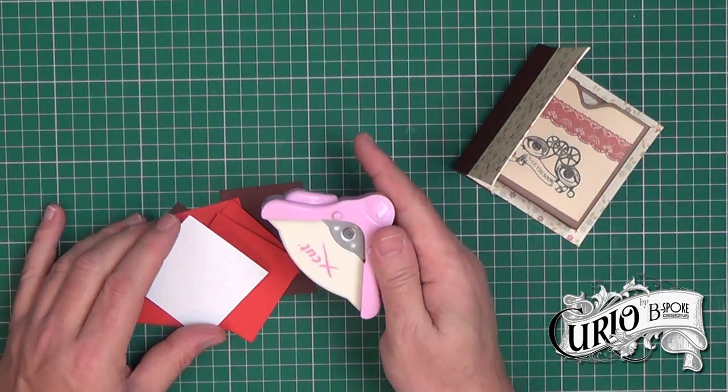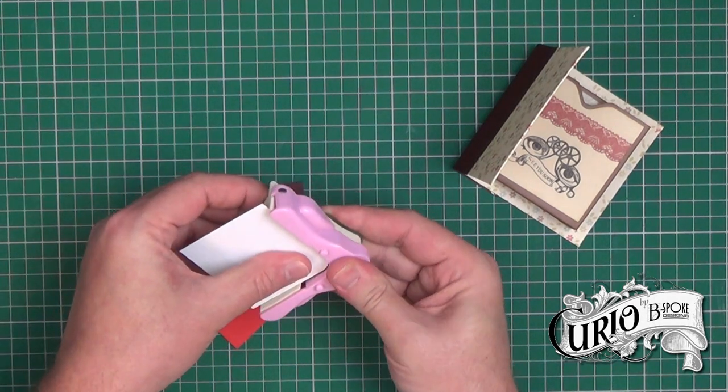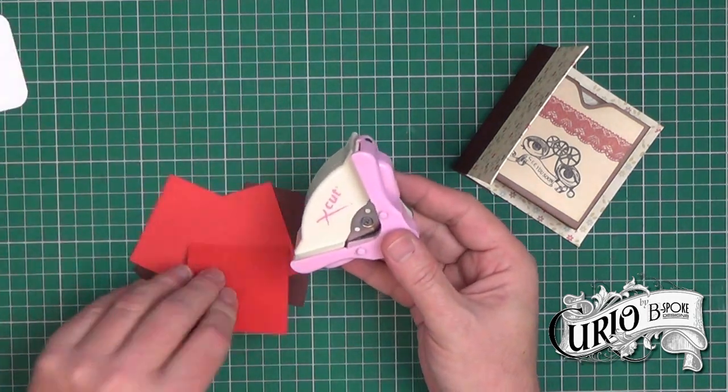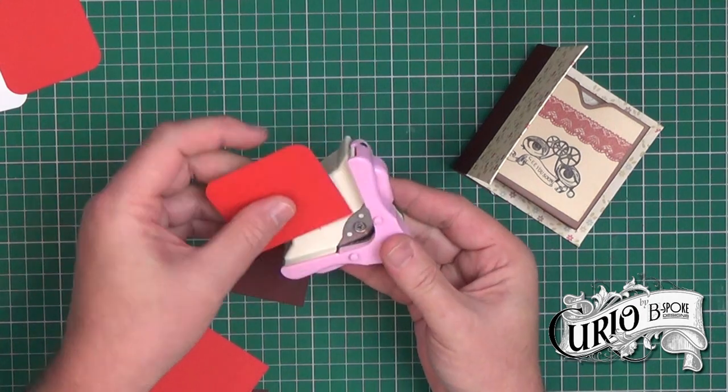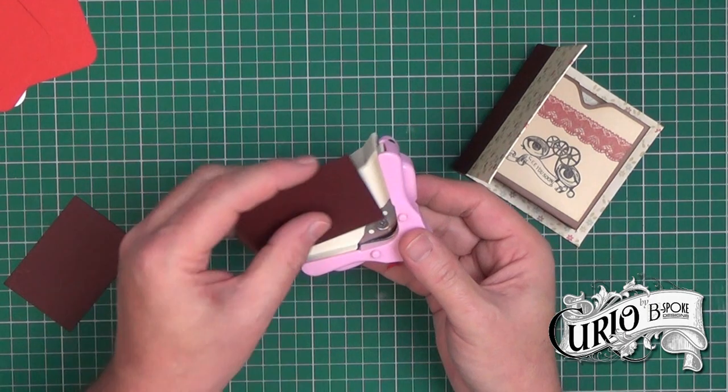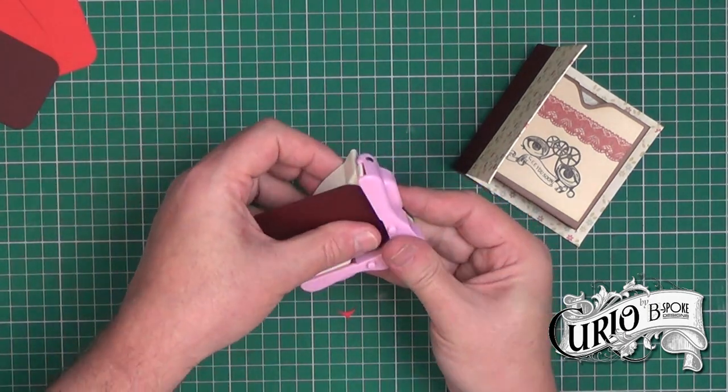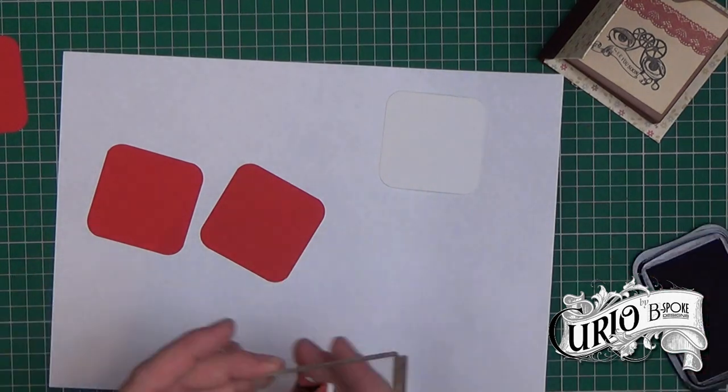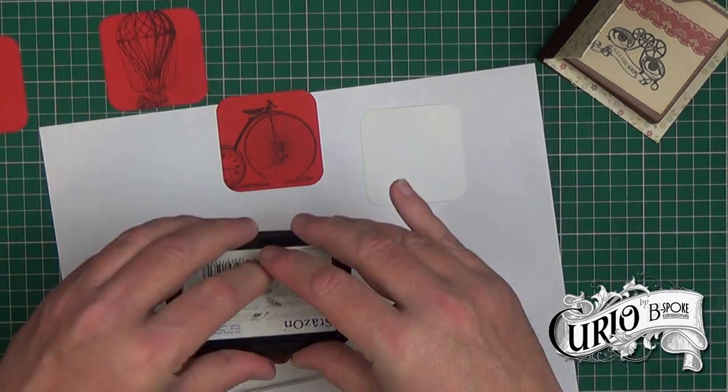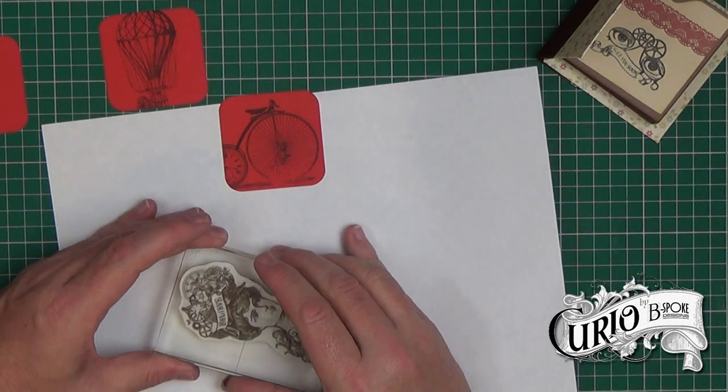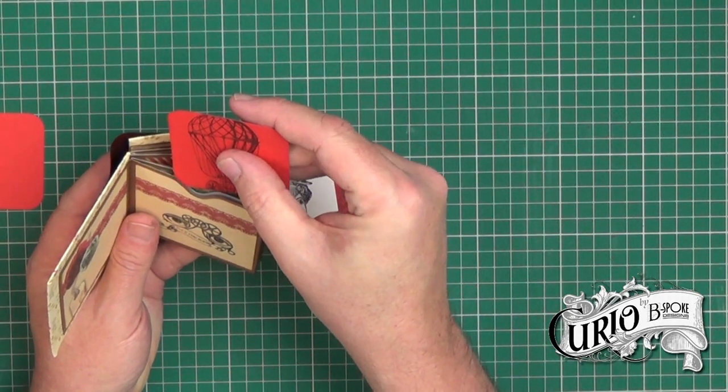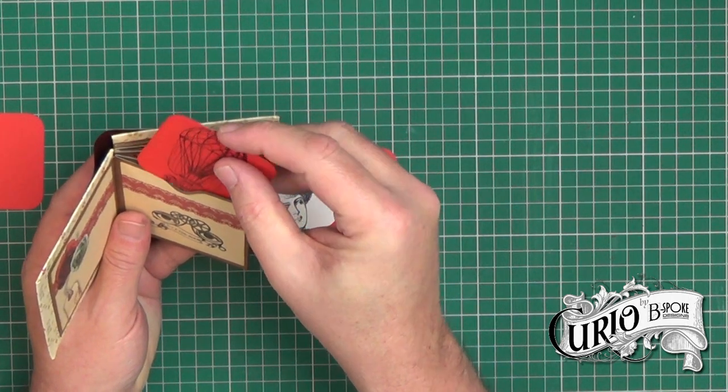I'm using a large corner cutter to round off the corners of the photo mats or journaling spots. On a couple of the mats I'm going to stamp an image with stairs on just to decorate it a little. Of course you can decorate your mini album in whatever style you want. Then it's just a matter of slipping the right ones into the pockets.